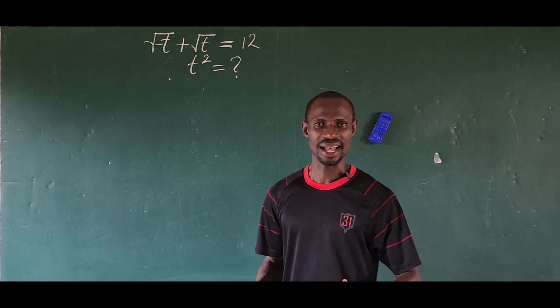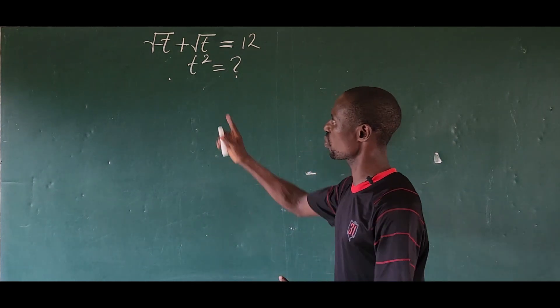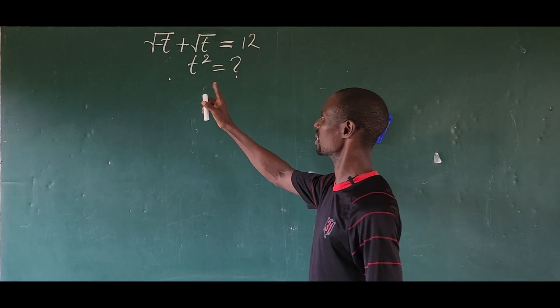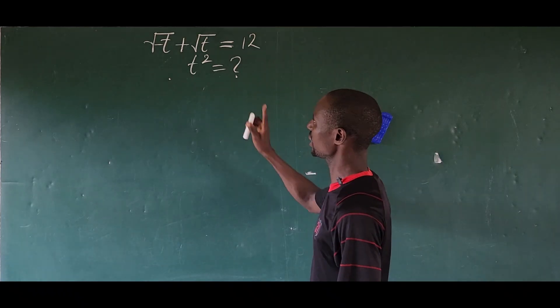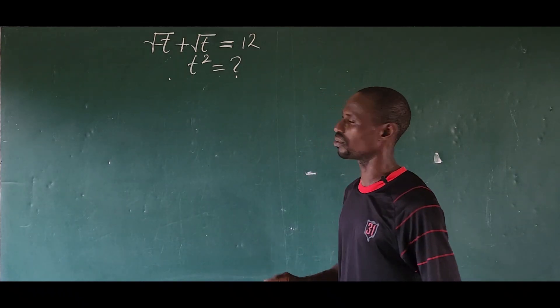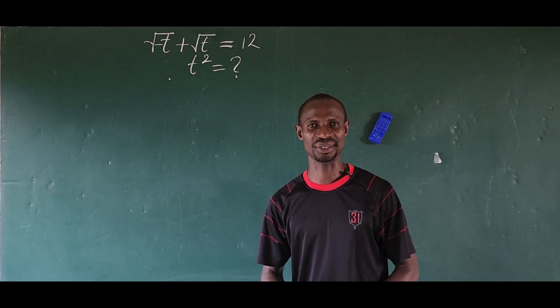Hello, welcome to today's class. Let's quickly look at the square root of minus t plus the square root of t equal to 12. What is the value of t to the power of 2 here?